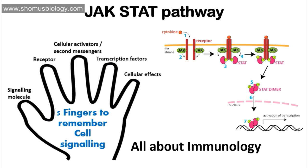The JAK-STAT pathway involves the activation of lymphocytes — how T cells get activated, how B cells get activated, and how white blood cells are formed. In other words, it is the chemokine pathway or cytokine signaling pathway. To remember and recall the JAK-STAT pathway, the easiest way is to use the five-finger concept, as shown in this picture.